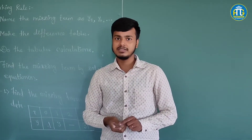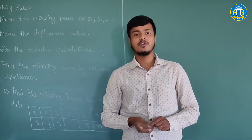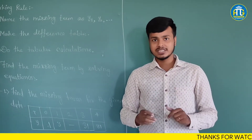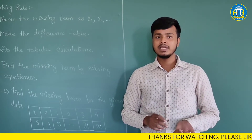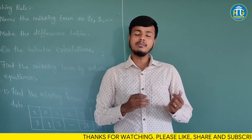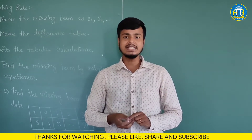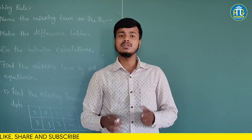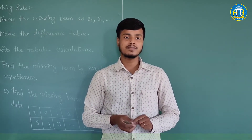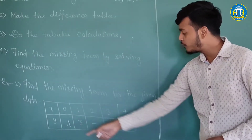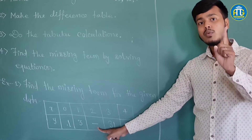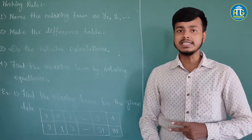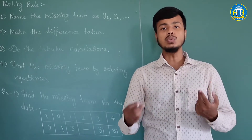The second step says: make the difference table. Whether the problem is on forward difference or backward difference, according to that we will make a difference table. Once we make the difference table we will do the calculations, and after doing the calculations we will end up with some expression — that expression we will equate to 0. When it becomes an equation, we solve that equation to get the missing term.